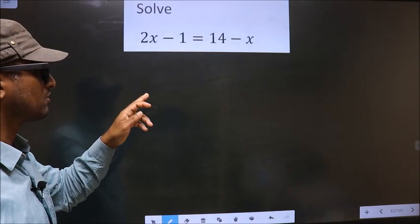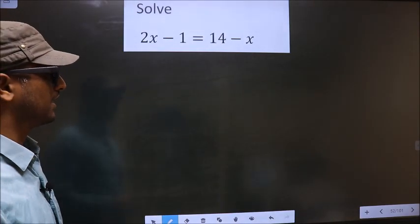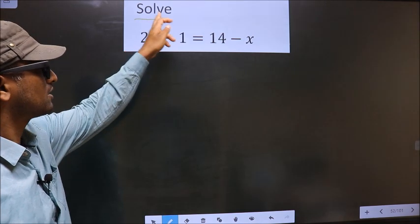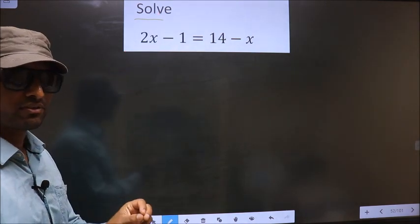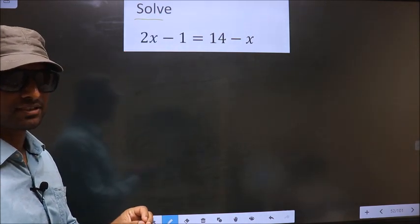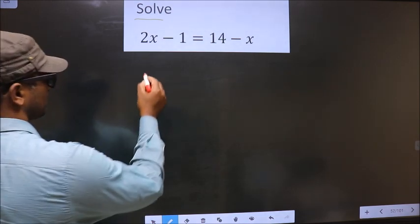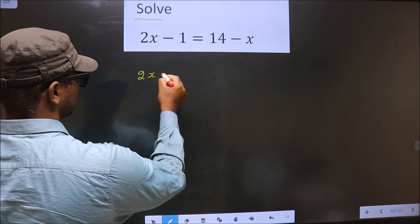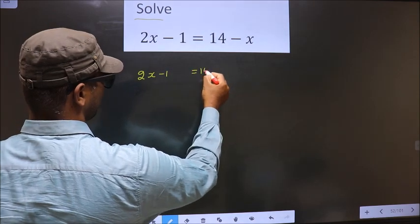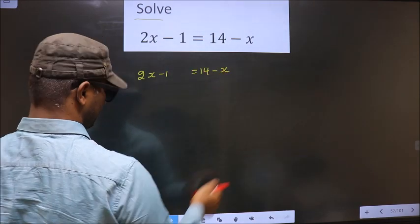Solve 2x minus 1 equal to 14 minus x. They told us to solve, so we should find the value of x. First, the given equation is 2x minus 1 equal to 14 minus x.